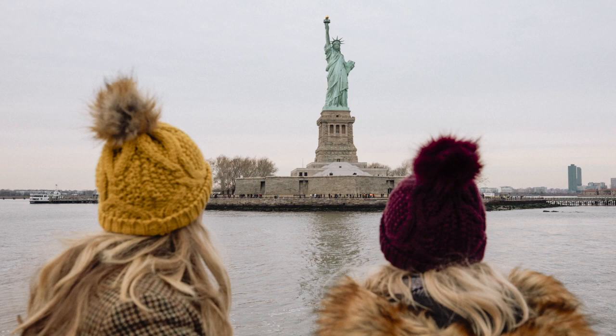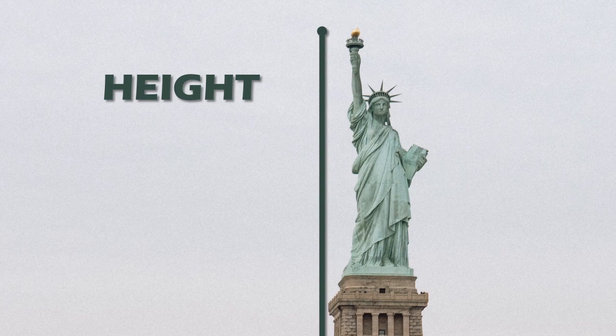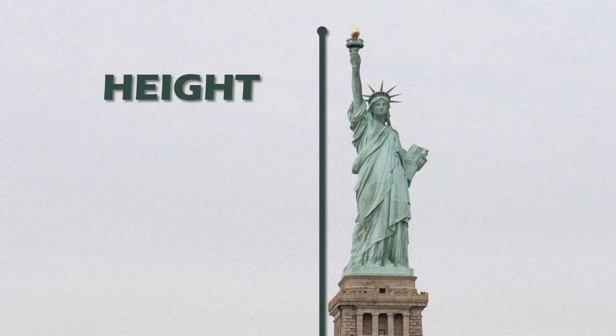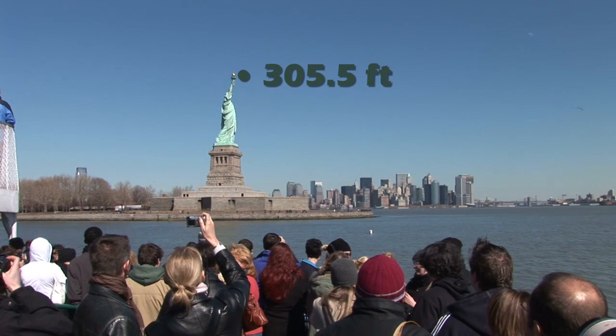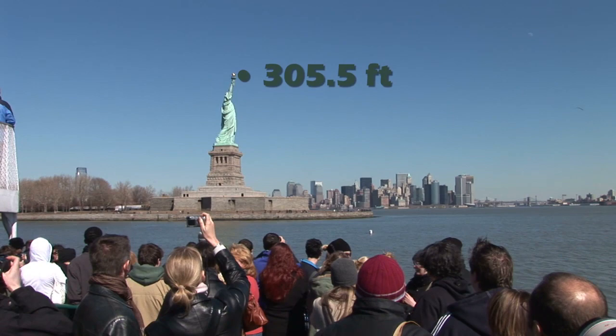Believe it or not, a person on a boat in the harbor could accurately estimate the statue's height and the boat's distance from it. That person would just need to know that the top of the torch is 305.5 feet above the ground and would need to have some equipment that could measure angles. That's what question 42 on page 185 is all about.